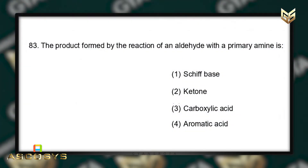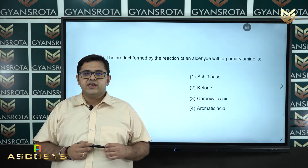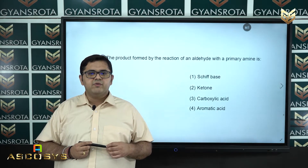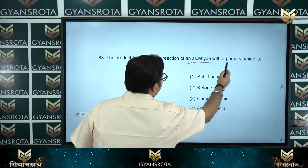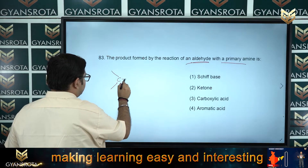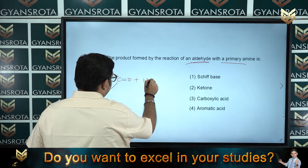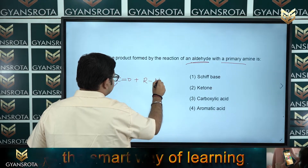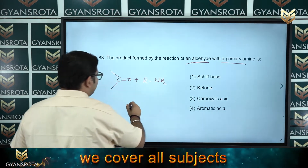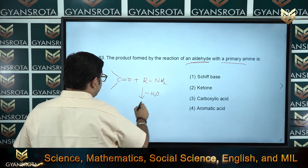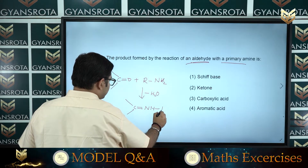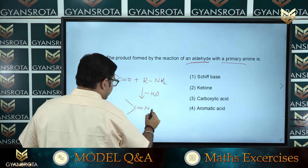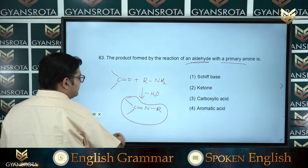Question number 83: the product formed by the reaction of an aldehyde with a primary amine — this comes from nitrogen-containing compounds of class 12 NCERT. An aldehyde (R–CHO) reacts with a primary amine (R–NH₂). By removal of a water molecule, the product formed is R–CH=N–R, which is a Schiff base.